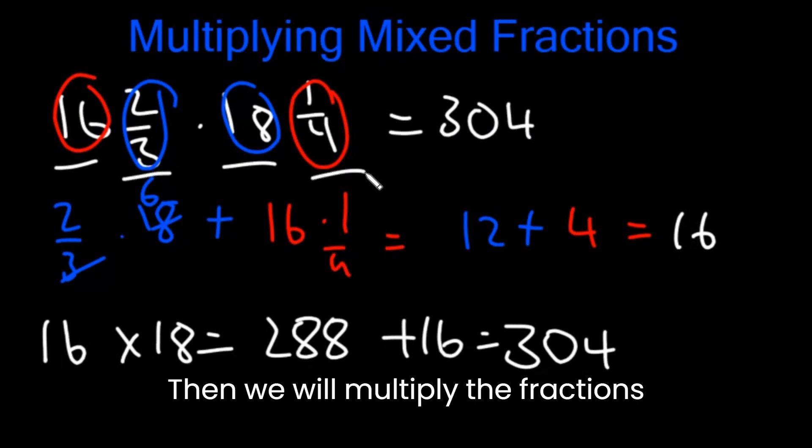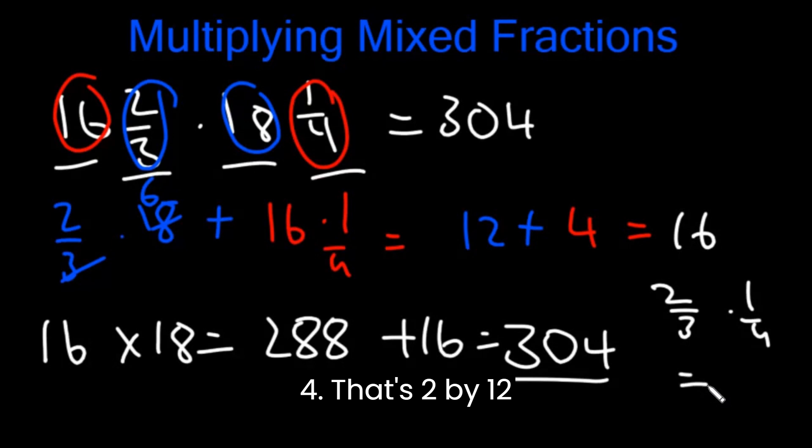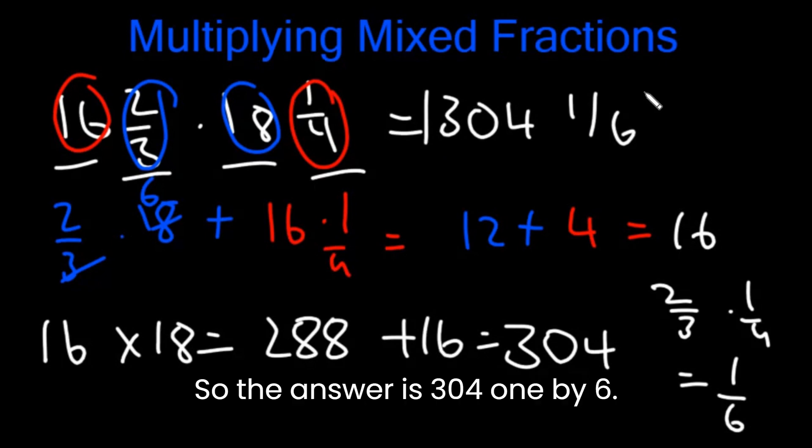Then we will multiply the fractions together. So 2/3 times 1/4. That's 2/12. And 2/12 simplifies to 1/6. So the answer is 304 1/6.